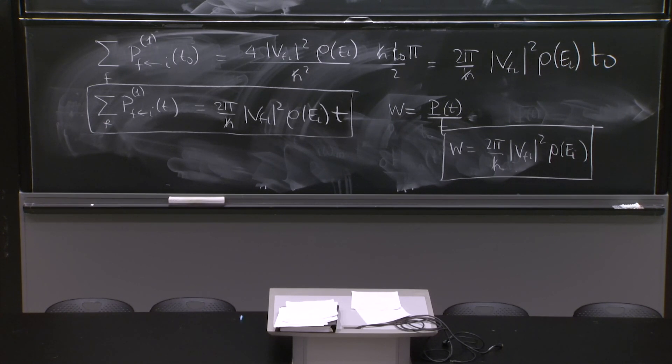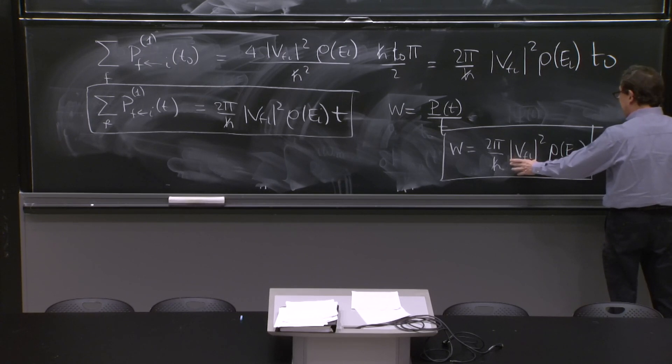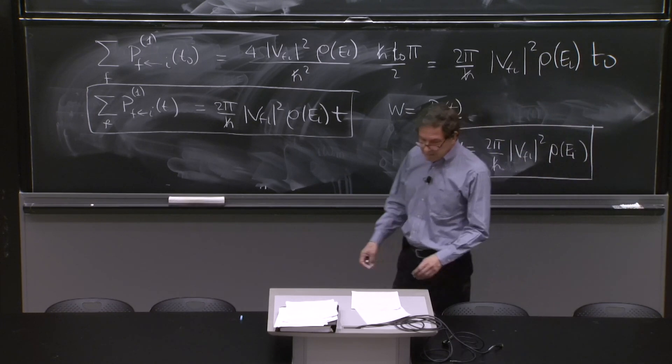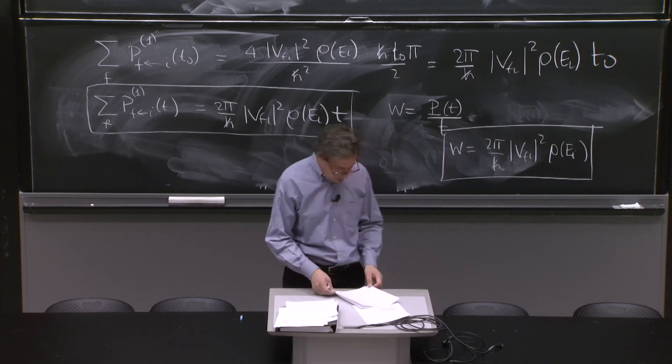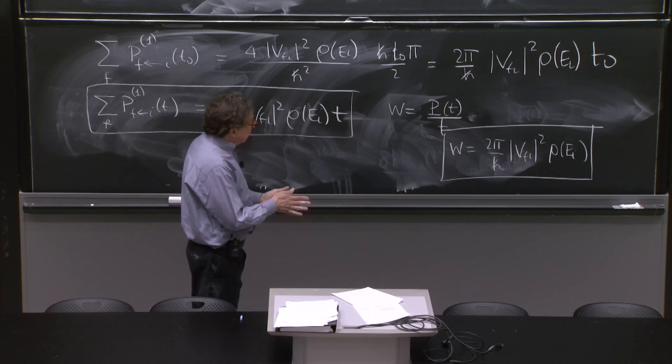You see, when I see a formula like that, or when you will see it, it almost seems like you still have to integrate. There's a rho of e, and let's integrate over final states. But the integral has been done, and it says transition amplitude squared evaluated at the state initial and final with the same energy, the final state, and the rho evaluated at the energy of the initial state. You don't have to do more with that.